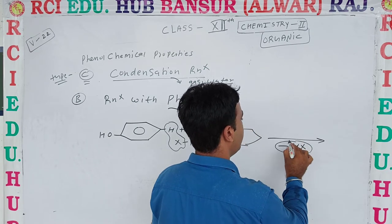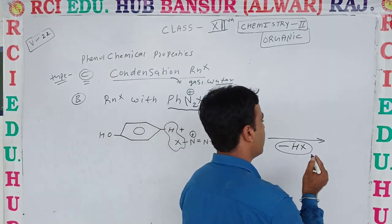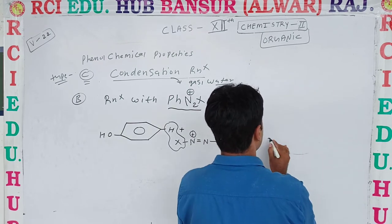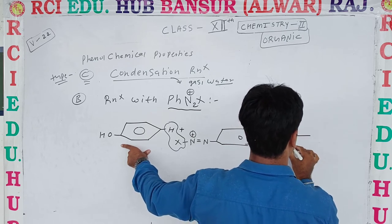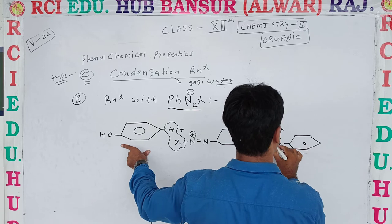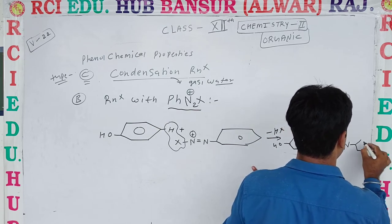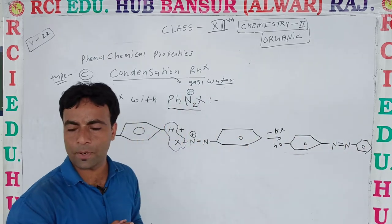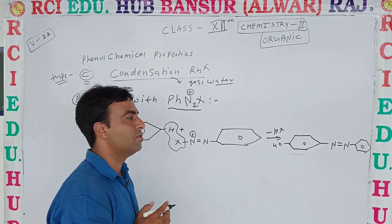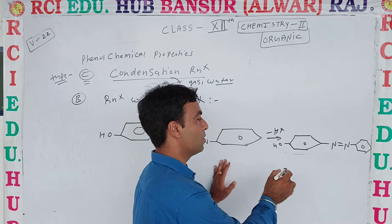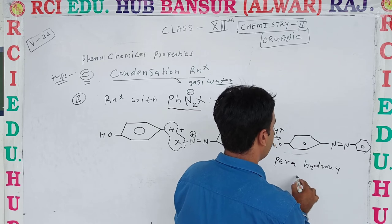HX is eliminated and removed. The remaining parts join together, and compound formation takes place. There will be formation of an OH group, a double bond, and a benzene ring attachment. That compound formation gives a product called parahydroxyazobenzene. What is its name? Parahydroxyazobenzene.